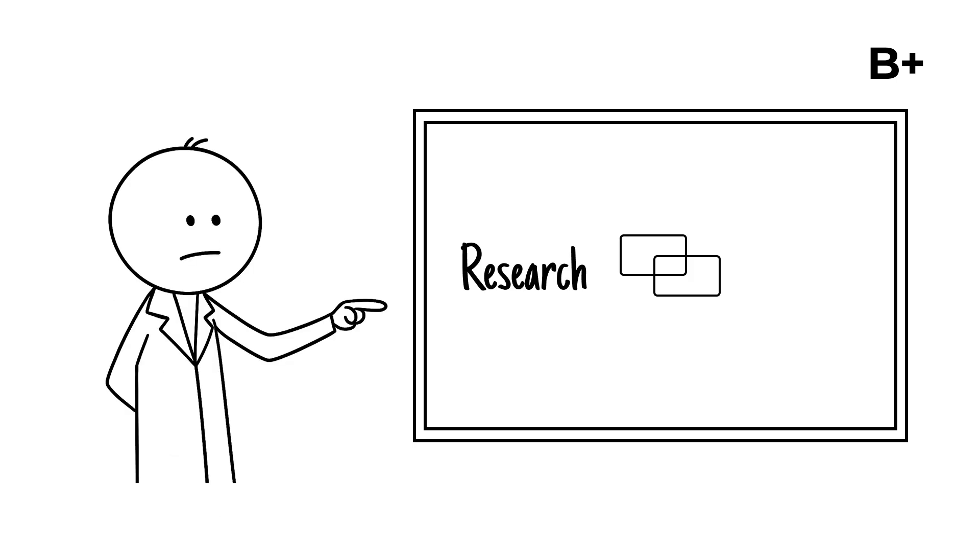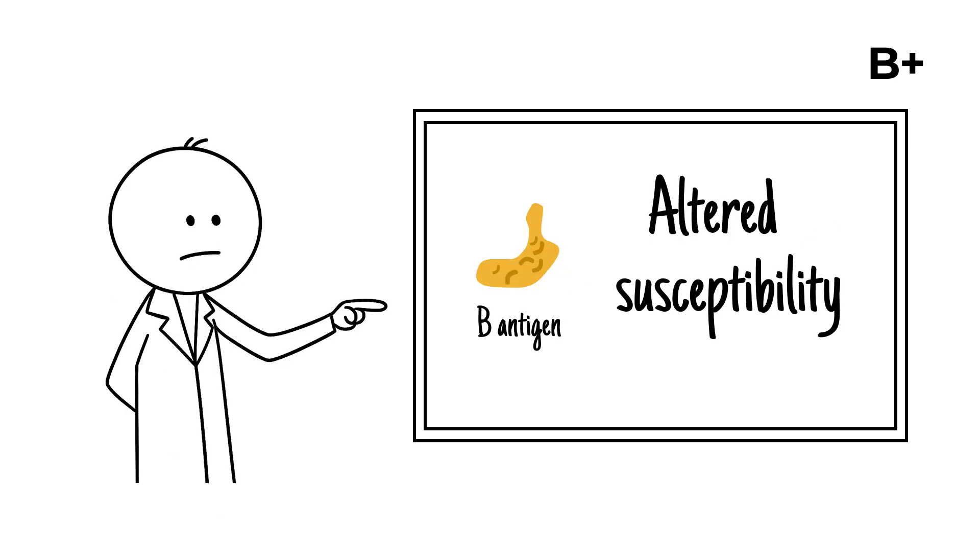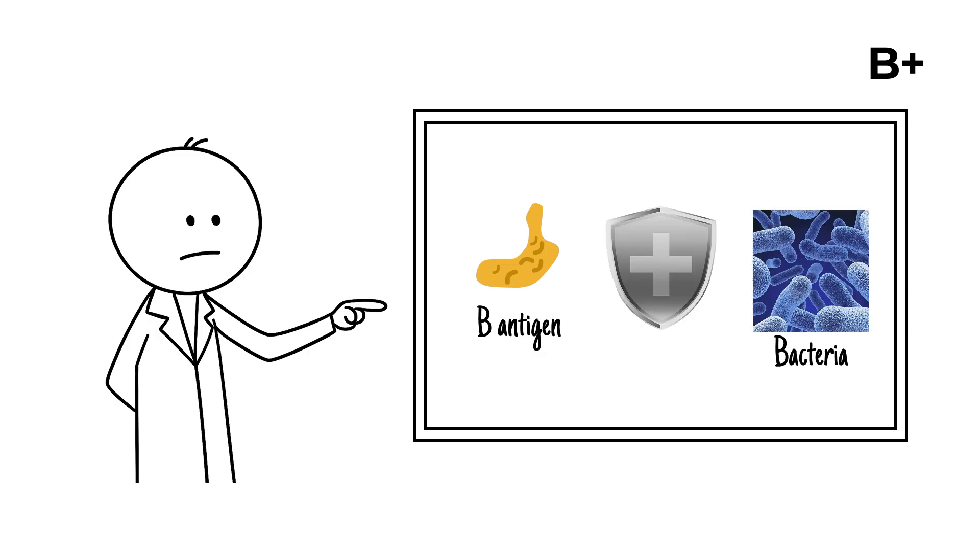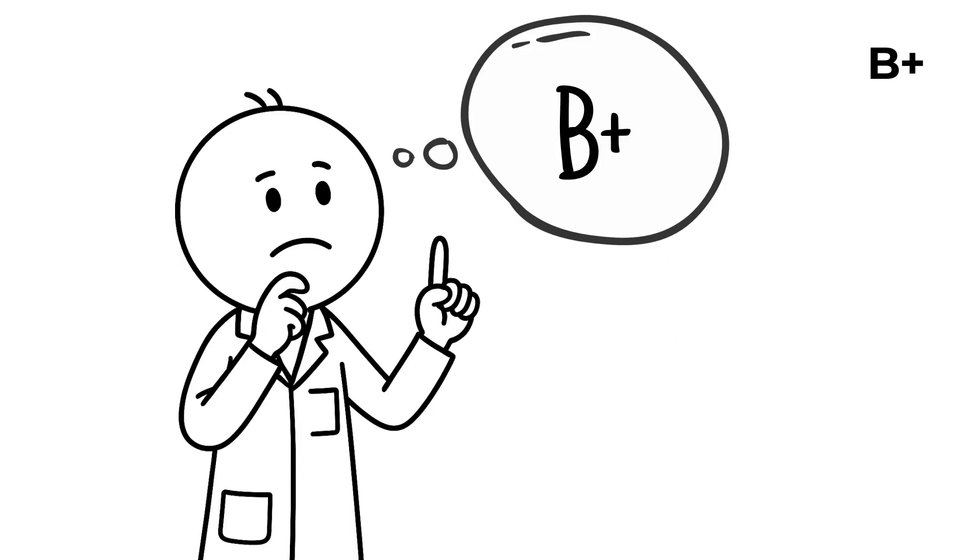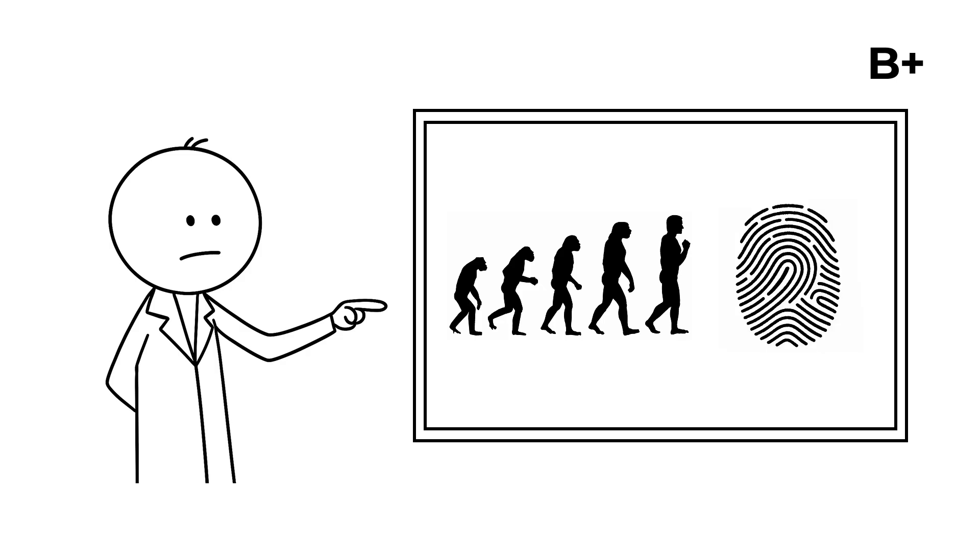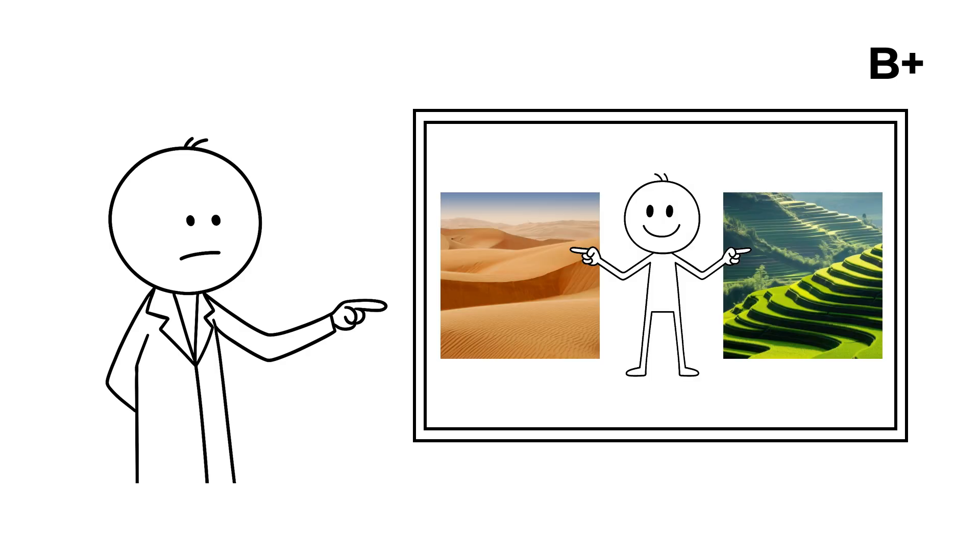Research also links the B antigen with altered susceptibility to certain infections, providing protection against some bacteria while leaving individuals vulnerable to others. Additionally, type B has been noted in metabolic studies, with some evidence of differences in how people with this blood type metabolize carbohydrates and fats. These subtle distinctions reveal that blood types are more than transfusion labels. They are evolutionary fingerprints reflecting how humans adapted to different environments over thousands of years.